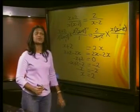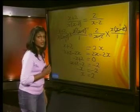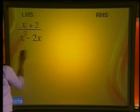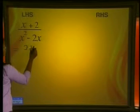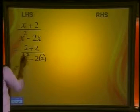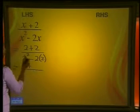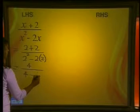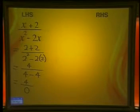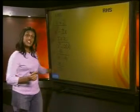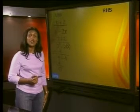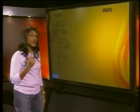Let's check our answer by substituting this value into the original equation. The left hand side is (x + 2) divided by (x² - 2x). Substituting x = 2, we get (2 + 2) divided by (2² - 2×2), which is 4 divided by (4 - 4) = 4 divided by 0. But the denominator is 0, which is not allowed because we cannot divide by 0. Although we solved our equation correctly, we cannot use this solution.